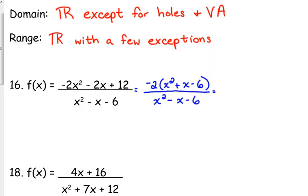Continue factoring. The numerator is x plus 3 times x minus 2. The denominator is x minus 3 times x plus 2. So it's so close to canceling out, but it doesn't. So we don't have any holes.